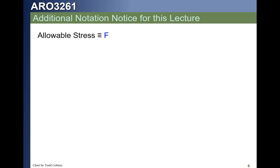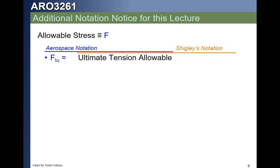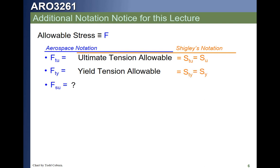Before we get further into this lecture, since we're using a number of Shigley figures, we want to clarify the nomenclature. As aerospace engineers we use Ftu, Fty, and Fsu for the allowables, while Shigley calls those S_U, S_TY or S_Y, and S_S. Be aware of these differences as we look at the upcoming figures.